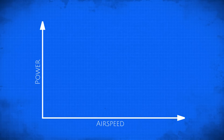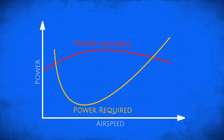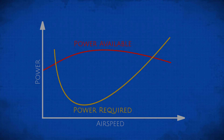We can further understand the trade-offs between energies by examining the power required chart. Technically the safest thing to do would be to make every single approach at exactly the best glide speed from the moment you begin your descent. But as long as you have excess energy, just as we did in this video, it doesn't really matter what you do with it. In fact, you can see that it's much easier to lose energy by flying too slow than too fast, meaning that it's safer to have more airspeed than to be on the treacherous side of the curve where a small mistake can make a much bigger difference in your available energy.